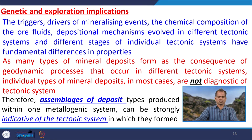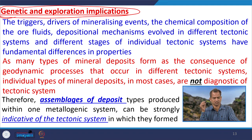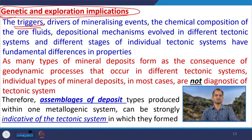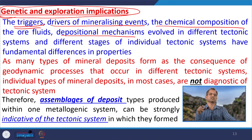All those deposits discussed so far have exploration implications — how they can be explored. The triggers, drivers, and mineralizing events, and the chemical composition of ore fluids and depositional mechanisms involved in different tectonic systems have fundamental differences in properties. The triggers of mineralization differ, the drivers differ, the chemical composition differs, the depositional mechanism differs, the depositional front differs, and the host rock also differs. But irrespective of all those differences, we are getting the minerals. Something else is working behind all of this — that is geochemistry, which is very important in terms of mineralization.